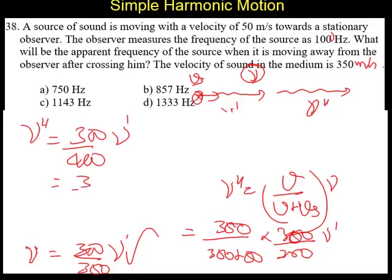Now ν double dash is going to be 300 by 400 into ν dash, which is 3 by 4. ν dash is given as the observer measures the frequency as 1000 hertz, so it is 3000 by 4, which is 750 hertz, the apparent change in frequency. So the correct answer is A, 750 hertz.